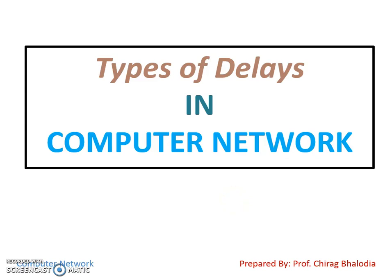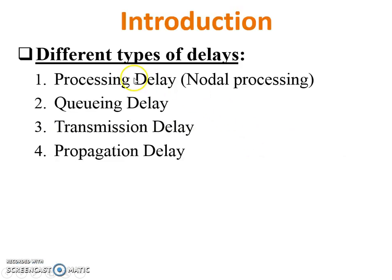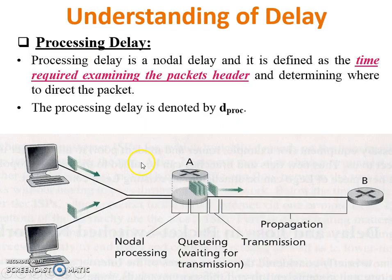Hello friends, myself Chirak Balodia. Today I am going to teach you types of delay in computer network. There are mainly four types of delay: processing delay, queuing delay, transmission delay, and propagation delay. See all the types in detail.